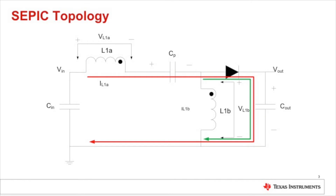The next slide shows the off-cycle. When the FET turns off, the voltage on the windings reverses polarity to maintain current flow. The secondary winding voltage is now clamped to the output voltage. When the rectifier conducts to supply current to the output, energy is transferred through the coupling capacitor and the diode into the output. Through transformer action, this clamps the output voltage across the primary winding. The voltage on the drain of the FET is clamped to the input voltage plus the output voltage as a result.